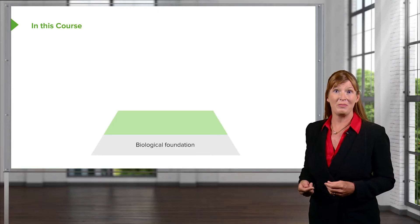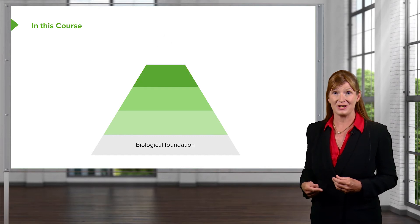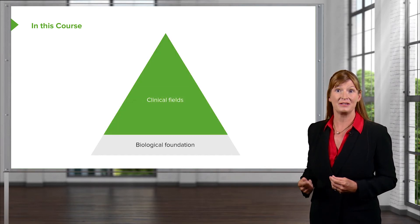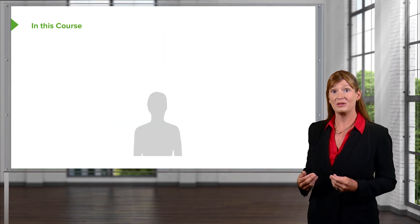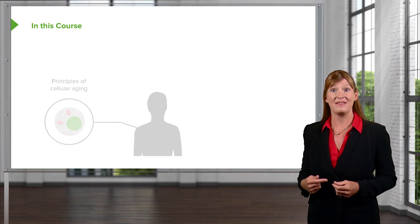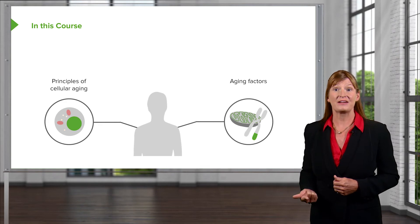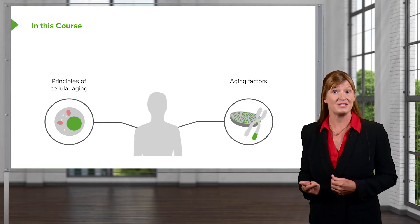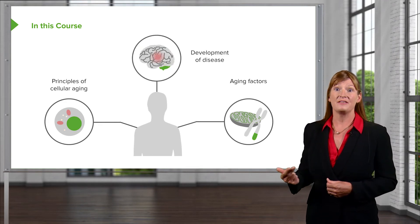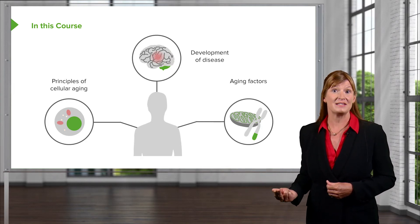In this course, we'll build on neurobiology foundations and delve deeper into the clinical fields. Upon completion of the course, you'll understand the principles of cellular aging, the primary aging factors from telomere attrition to stem cell exhaustion, and the development of Alzheimer's and Parkinson's disease.